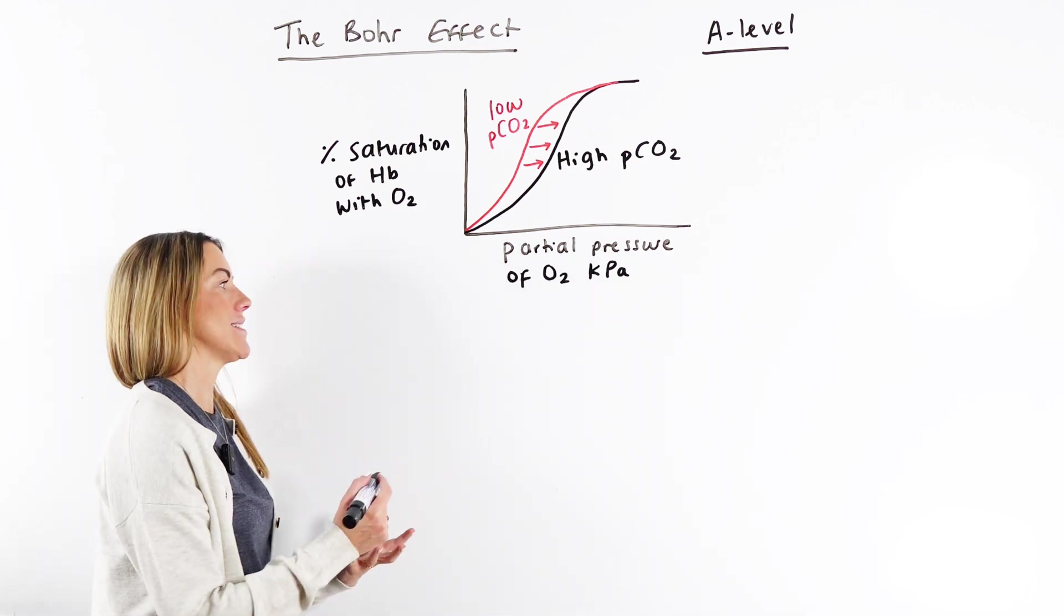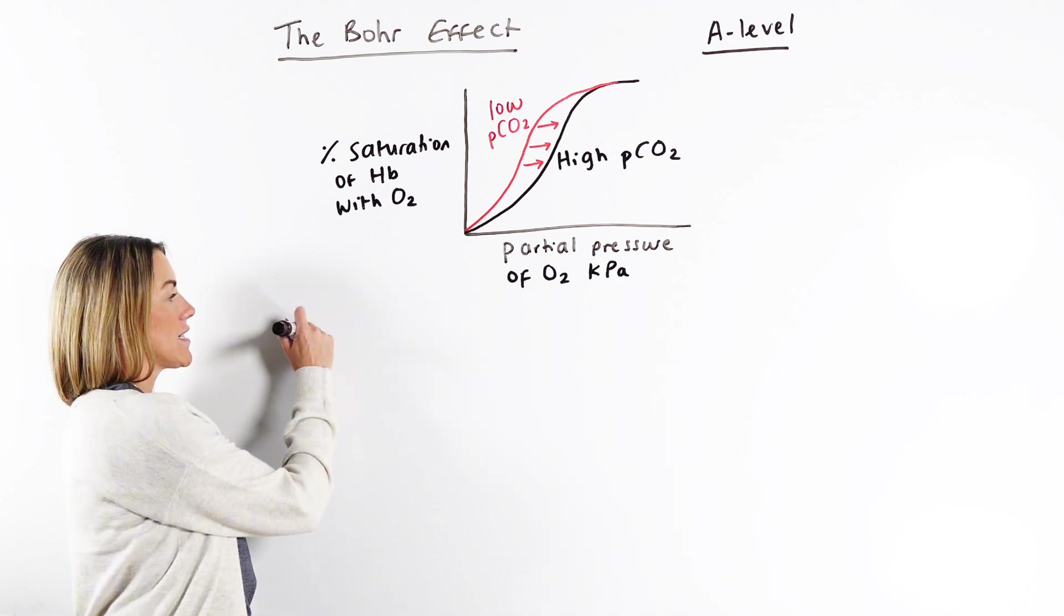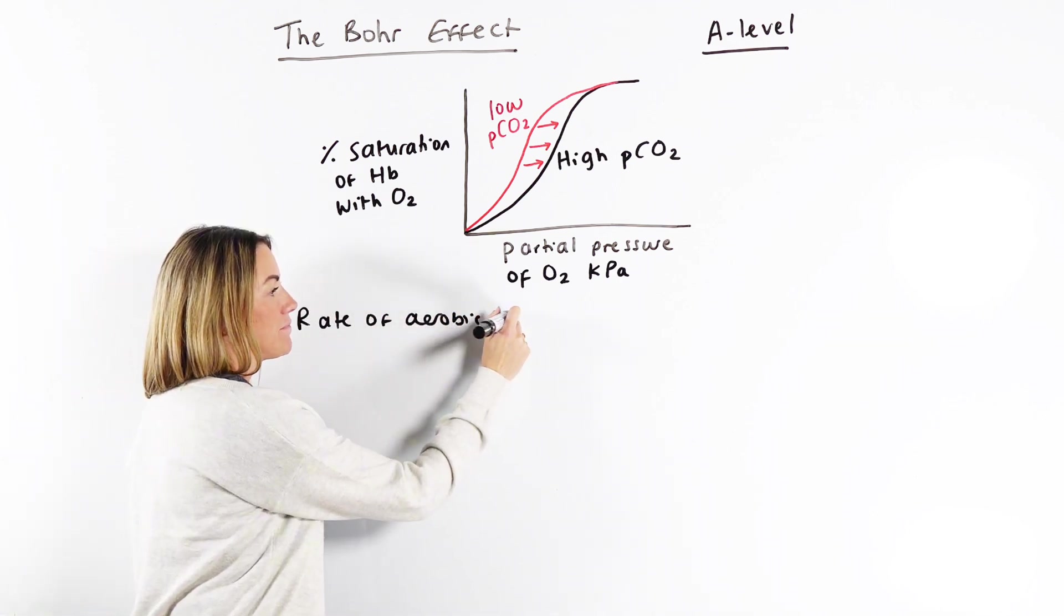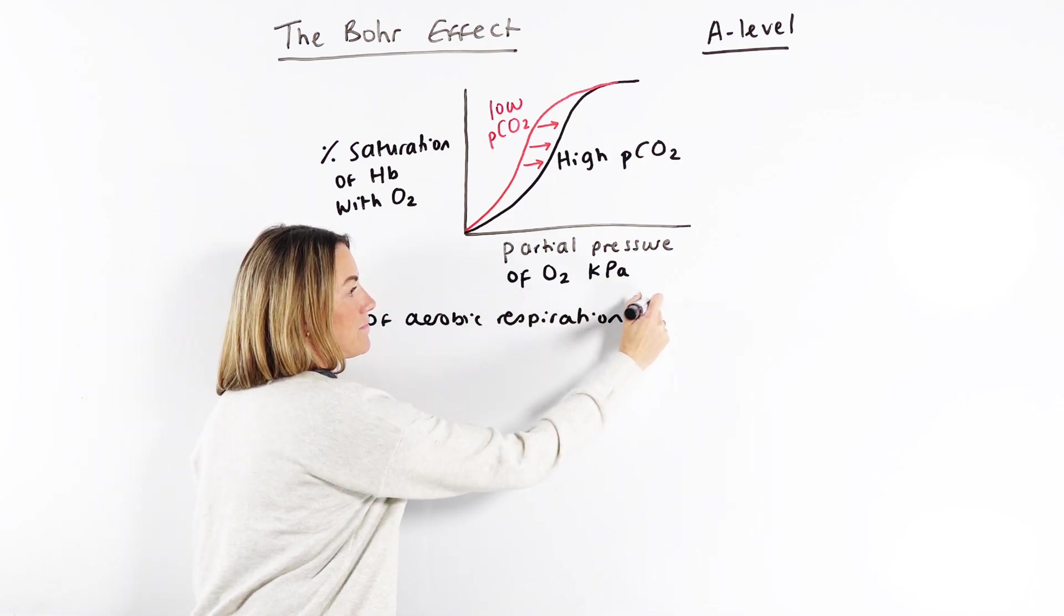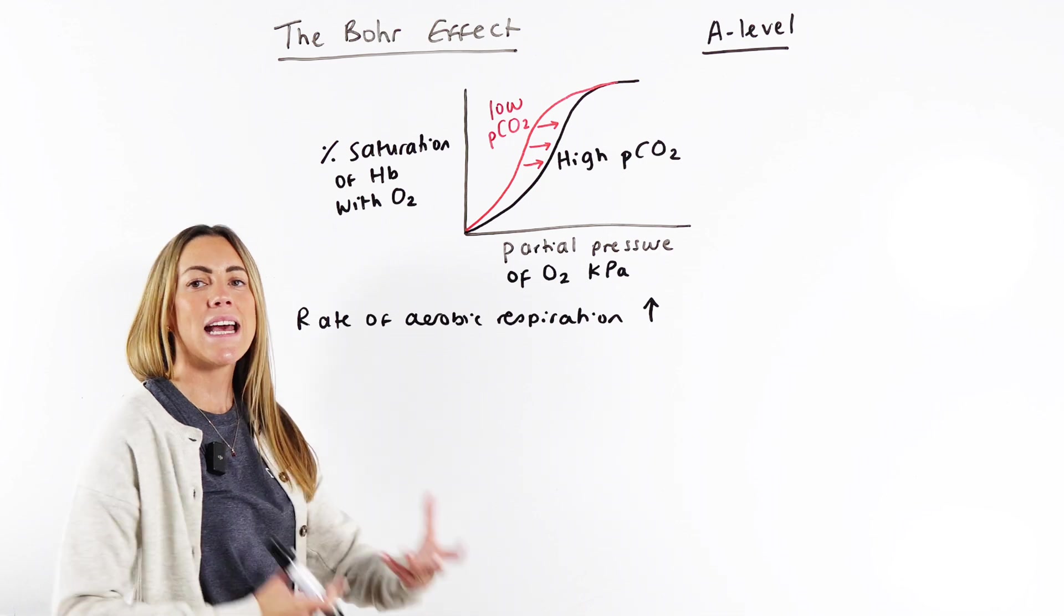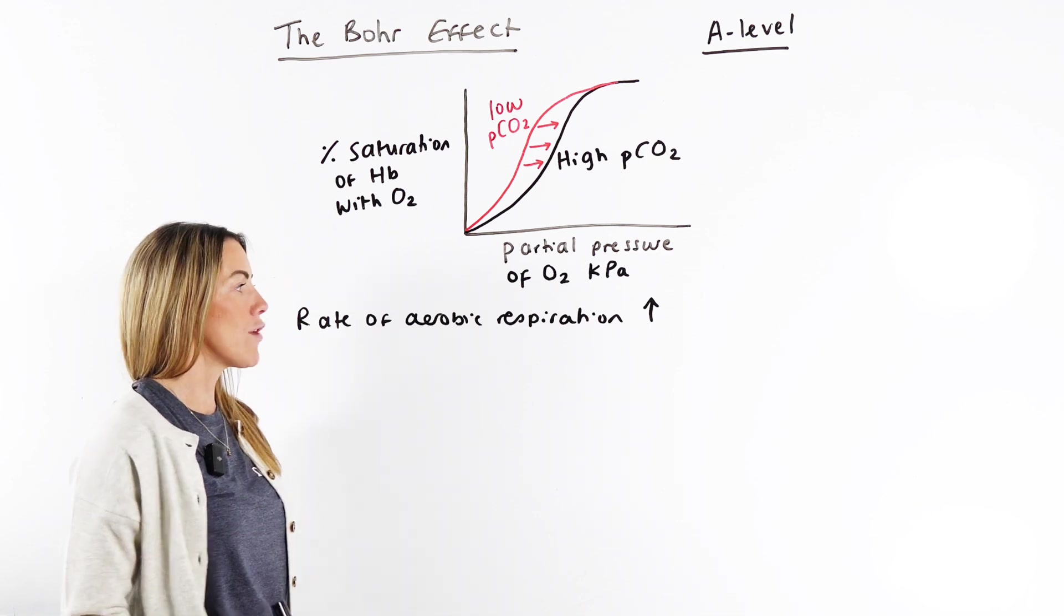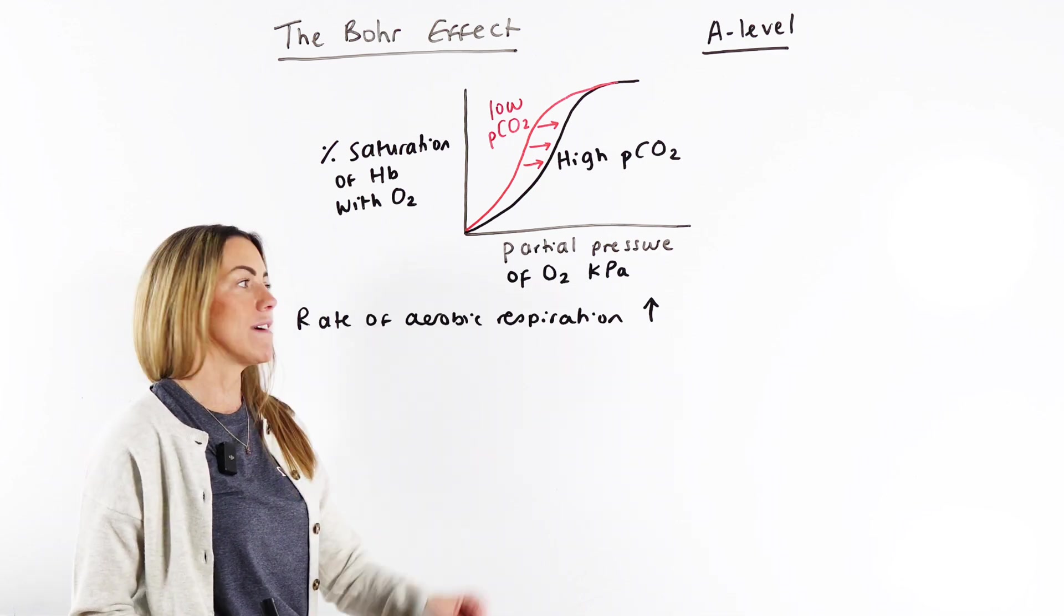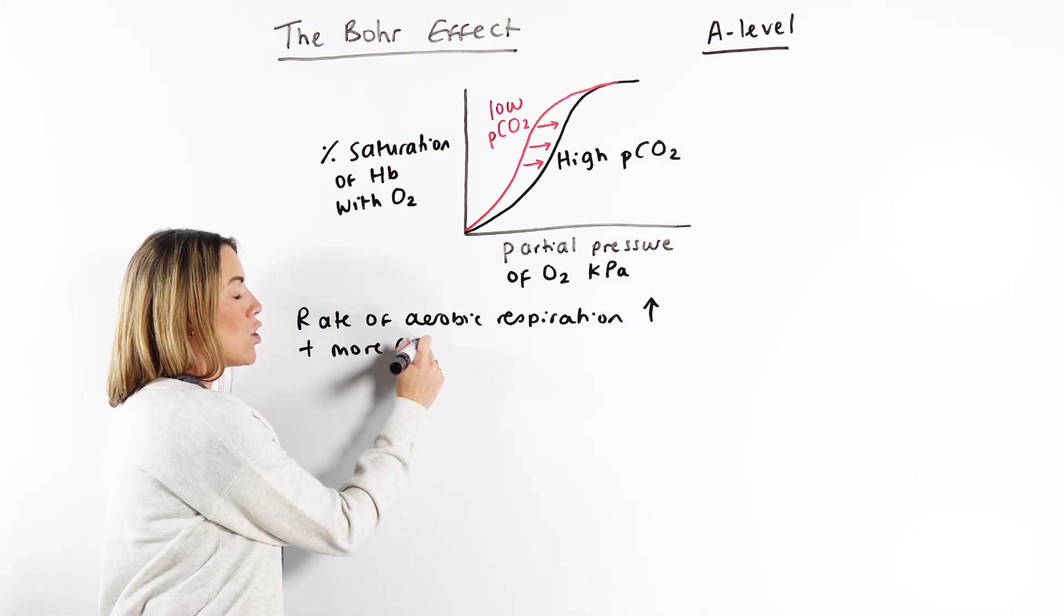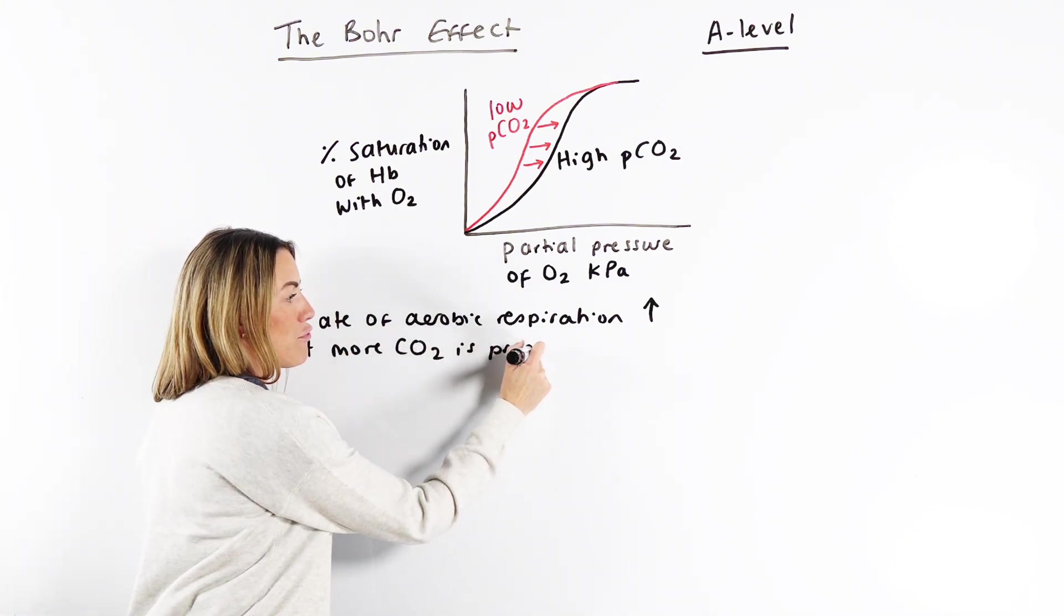If you are exercising, your rate of aerobic respiration increases, especially in muscles. If you're exercising, they require more ATP for contraction, so their rate of aerobic respiration increases. And this means more carbon dioxide is produced.